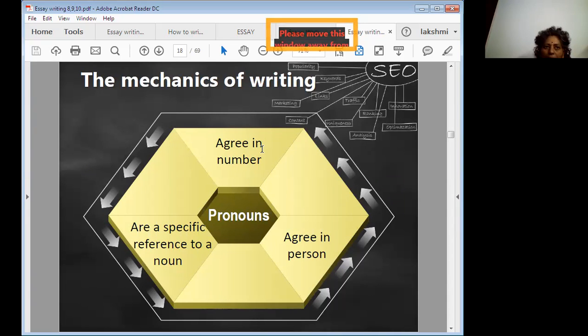Now you see the mechanics of writing. You have to write a sentence, at least one sentence on the particular strip. At the end of this session I'm going to collect it. What are the mechanics of writing? While writing a sentence, what you have to follow: agreement in number.